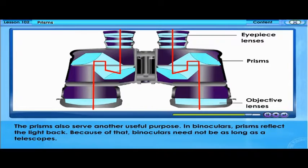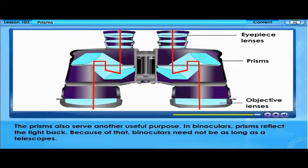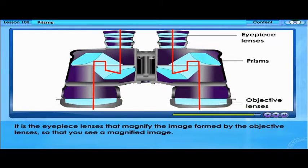The prisms also serve another useful purpose. In binoculars, prisms reflect the light back, and because of that, binoculars need not be as long as telescopes. It is the eyepiece lenses that magnify the image formed by the objective lenses so that you see a magnified image.